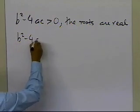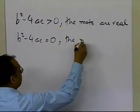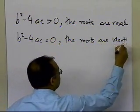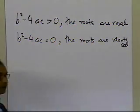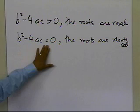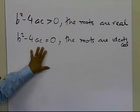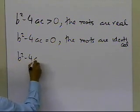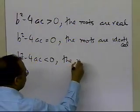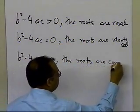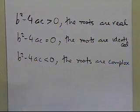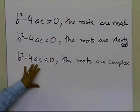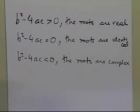If b squared minus 4ac is equal to 0, then the roots are identical. The reason why the roots are identical is that when b squared minus 4ac equals 0, you don't have the plus-minus part, so the roots will be identical. Now if b squared minus 4ac is less than 0, then the roots are complex, because the square root of b squared minus 4ac will be an imaginary number, hence you will get complex roots.